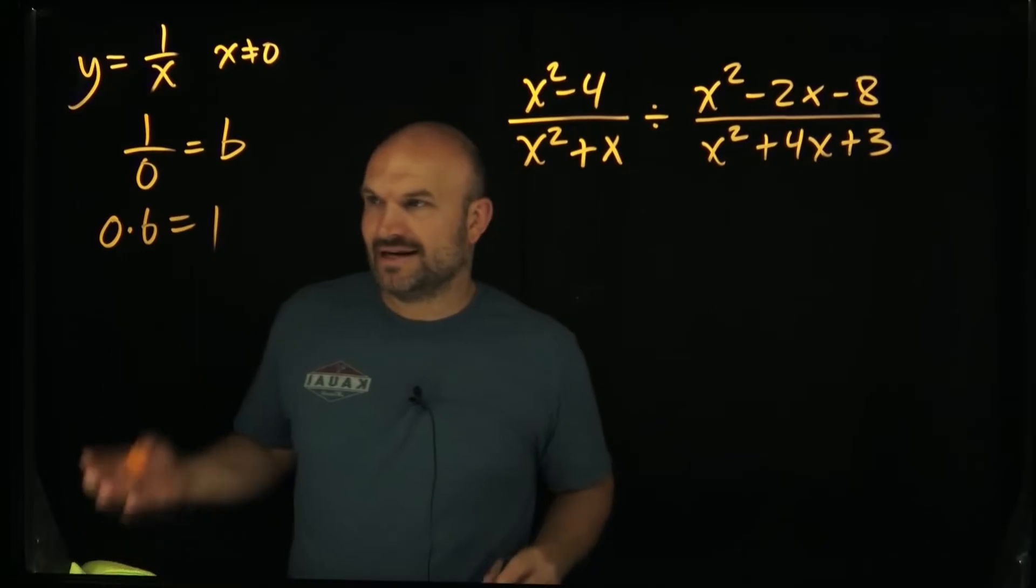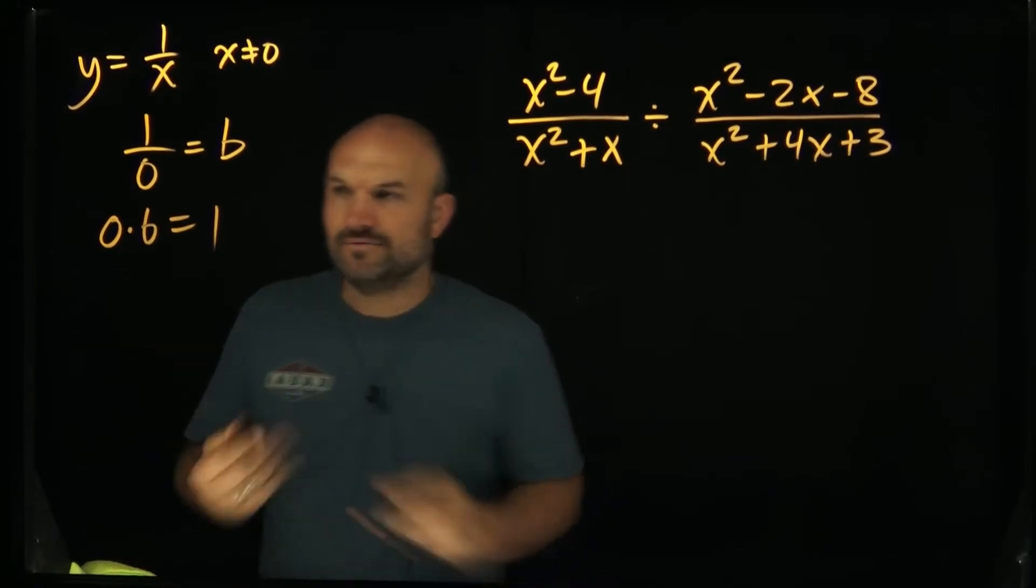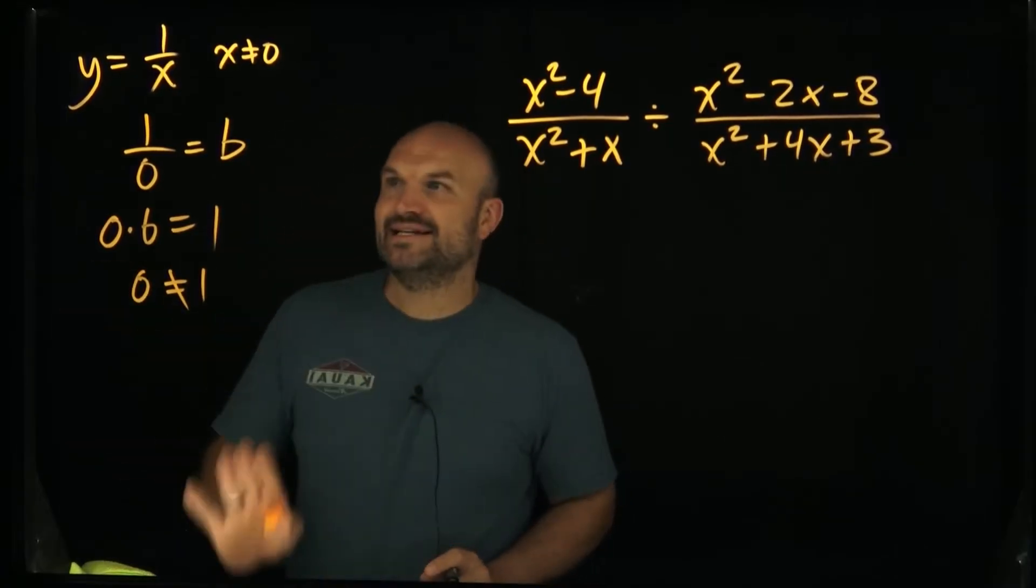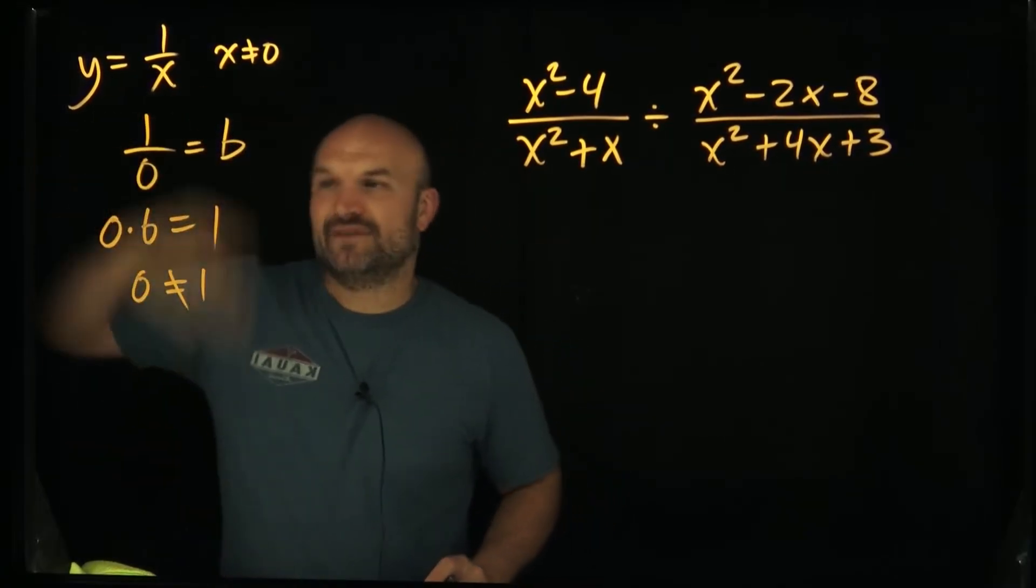And hopefully you recognize anything times zero, it's just gonna be zero. So zero equals one, and it does not work. That statement does not make any sense. Therefore that is why we cannot divide by zero.